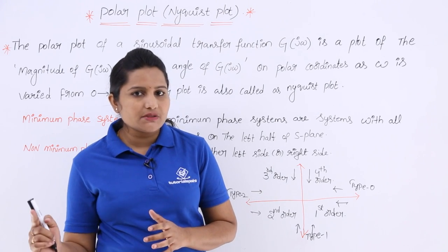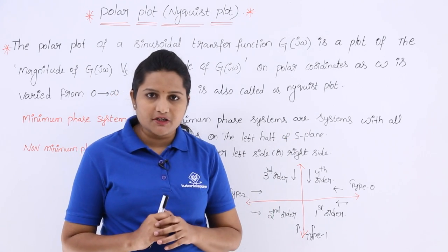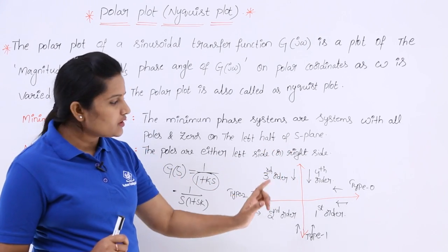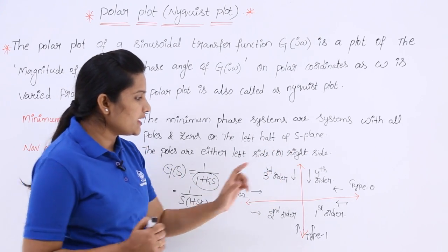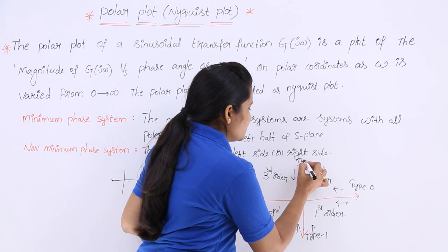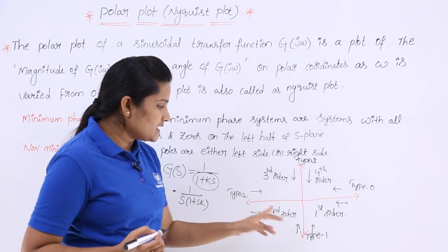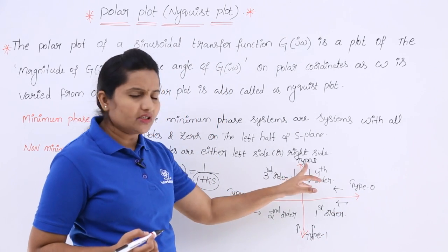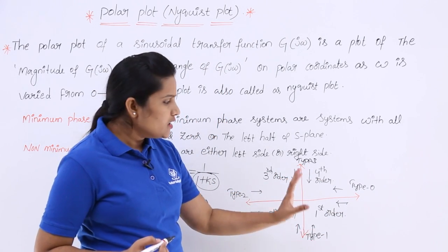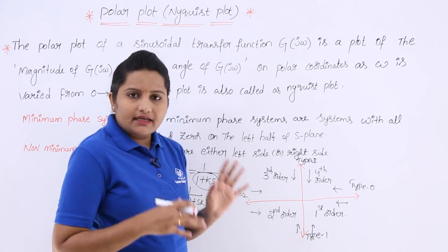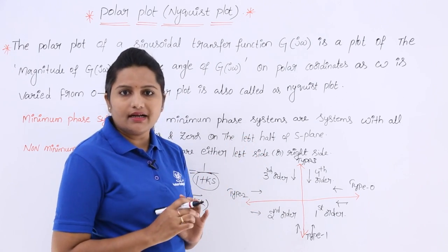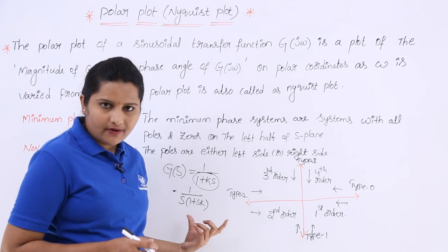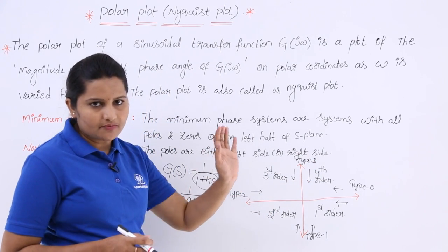In a technical exam like GATE, if you are given a transfer function and polar plots as options, first check whether the system is type 0, type 1, type 2, or type 3. The reference diagram lists type 0, type 1, type 2, type 3 as columns — this is just a reference diagram for better understanding of polar and Nyquist plots.